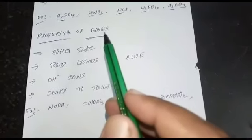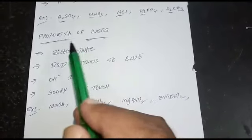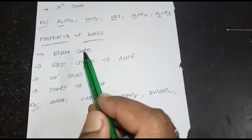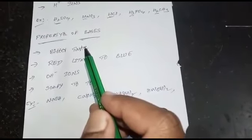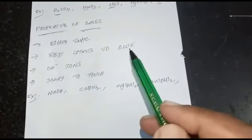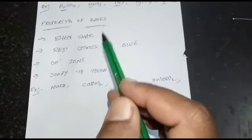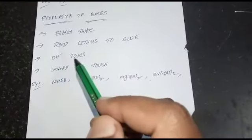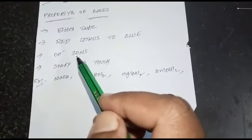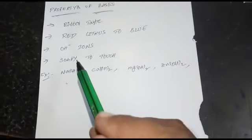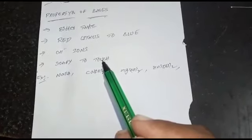Next, the properties of bases. The first property of a base is bitter taste. Bases change red litmus into blue litmus. All bases contain OH⁻ ions — hydroxide ions. Acids have H⁺ ions; bases have OH⁻ ions. Bases are also soapy to touch.